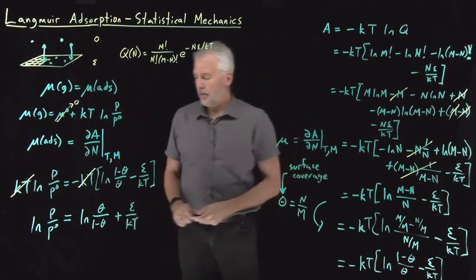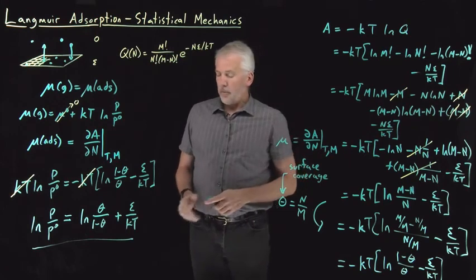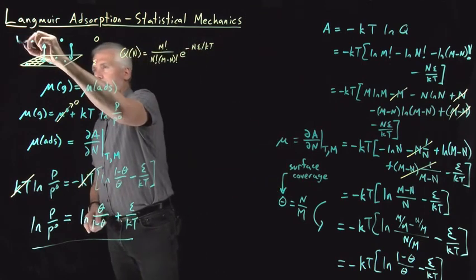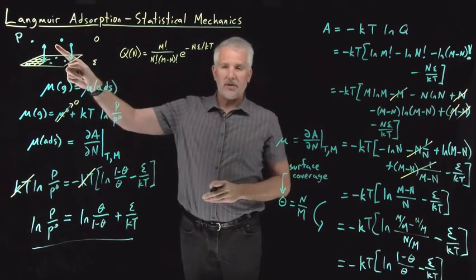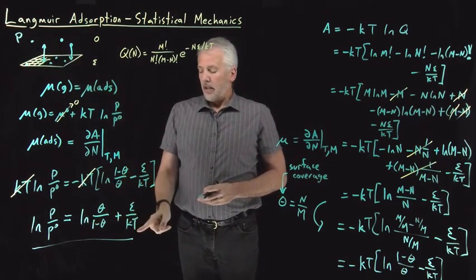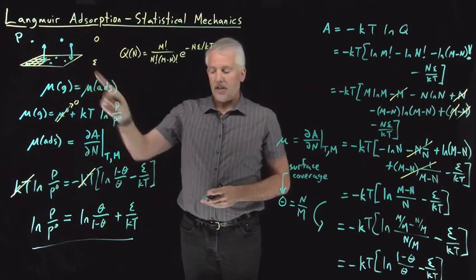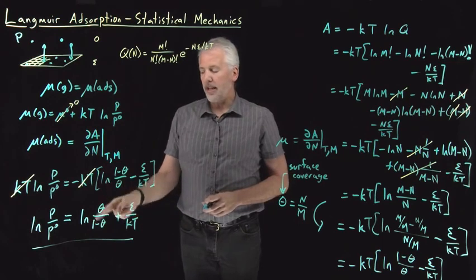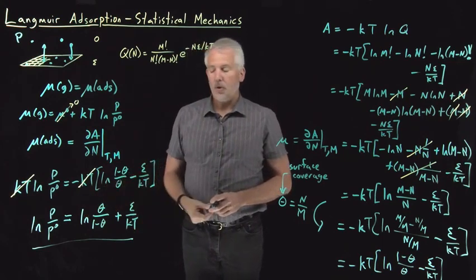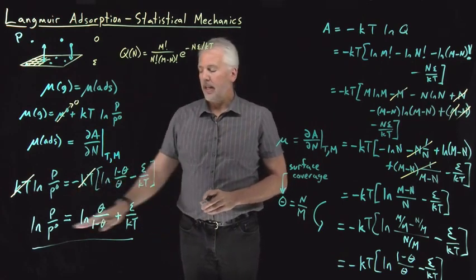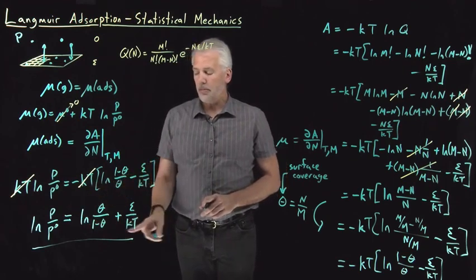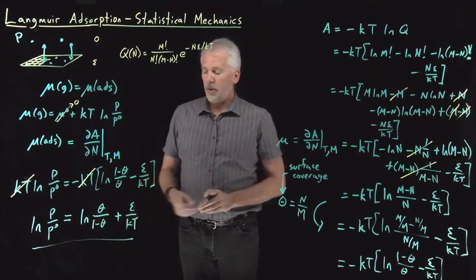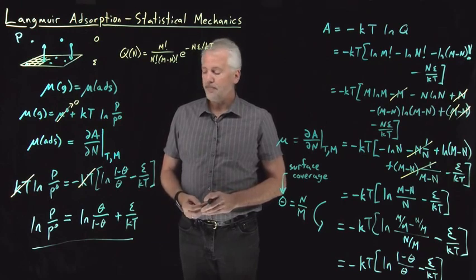That's a useful equation. It gives us the relationship between the pressure of the gas, the temperature, the binding energy ε, and the surface coverage θ. Depending on which variable we want to solve for, we can understand how surface coverage depends on pressure and temperature, or vice versa. We'll explore what this equation means and what it tells us about the adsorption process more in the next video.